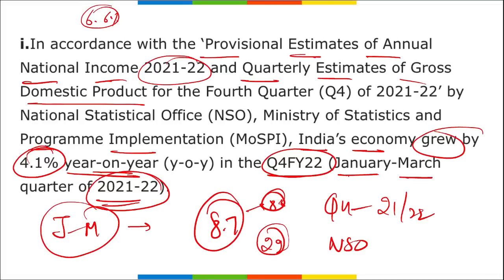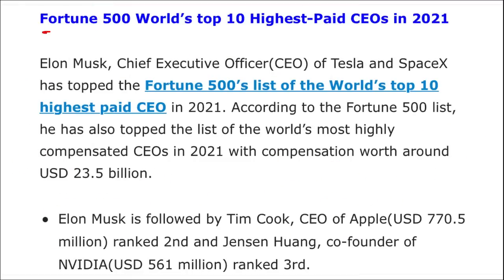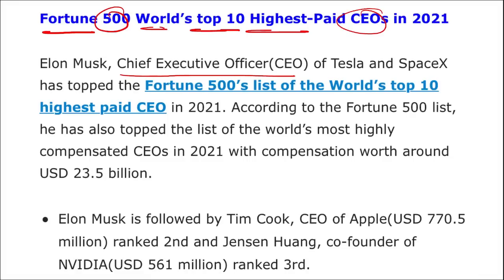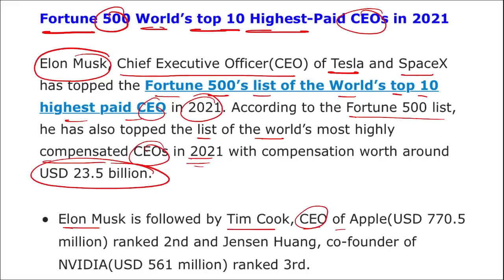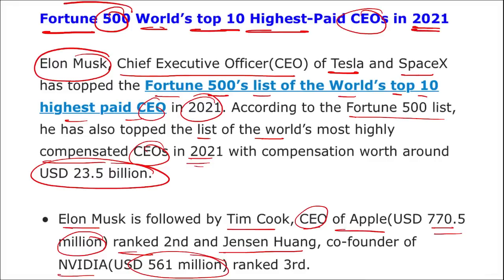As per the Fortune 500 list, Elon Musk — CEO of Tesla and SpaceX — topped the world's top 10 highest paid CEOs in 2021 with a compensation of approximately $23.5 billion. He was followed by Tim Cook, CEO of Apple, at $770.5 million in second place, and Jensen Huang, co-founder of Nvidia, at $561 million in third place.